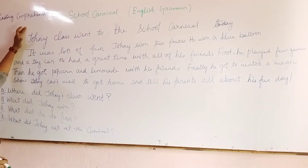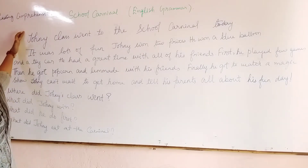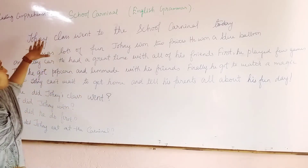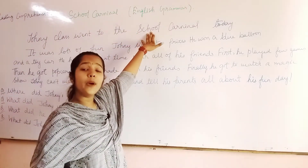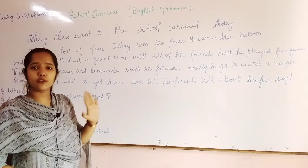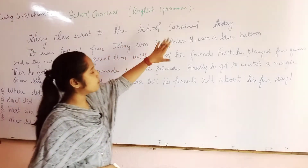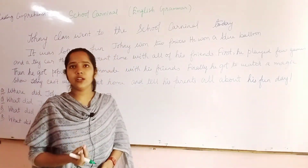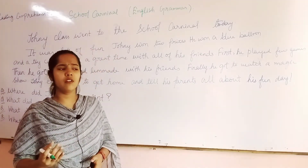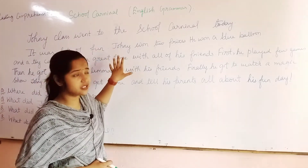Now it is a story of a school boy. What is his name? Johnny. His name is Johnny. So let us read the comprehension and understand it chronologically. Johnny's class went to the school carnival. There was lots of fun. When you go to any picnic with your family, you have lots of fun. So Johnny won two prizes. When people go to any carnival, any events, any sports, we win prizes when we play. So we win some prizes for that.